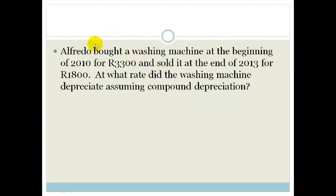Let's look at another example. Alfredo bought a washing machine at the beginning of 2010 for R3,300 and he sold it at the end of 2013 for R1,800. Now it says, at what rate did the washing machine depreciate, assuming compound depreciation?